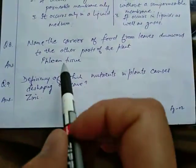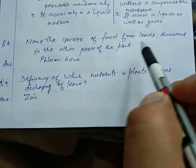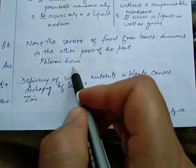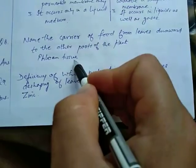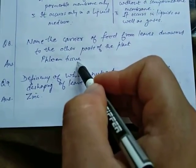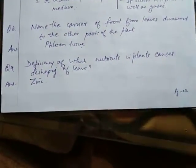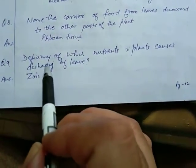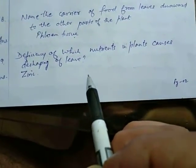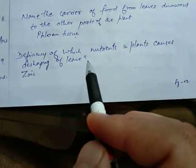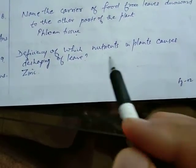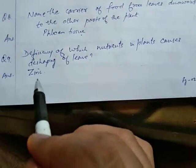Question 8: Name the carrier of food from leaves downward to other parts of the plant. It is phloem tissue, responsible for conduction of prepared food to different parts of the plant. Question 9: Deficiency of which nutrient in plants causes de-shaping of leaf? The answer is zinc.